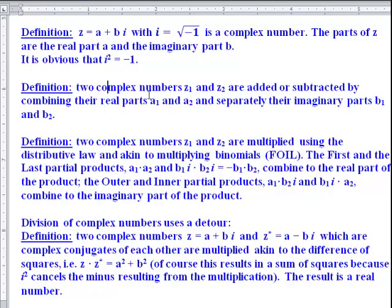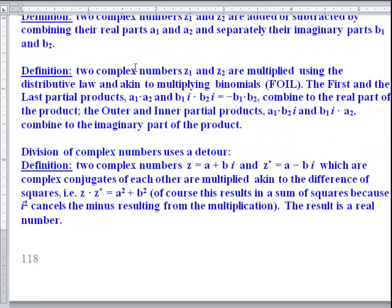Two complex numbers z1 and z2 are added by combining the real parts and separately their imaginary parts. Two complex numbers z1 and z2 are multiplied using the distributive law: a1 times a2 is the first part, and b1 times b2 is the last part. Because of i times i you get i squared, which is simply negative one, so that last part in the FOIL method becomes real with a negative in front of it.